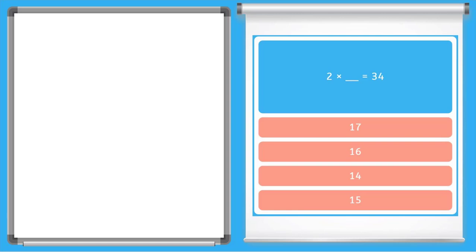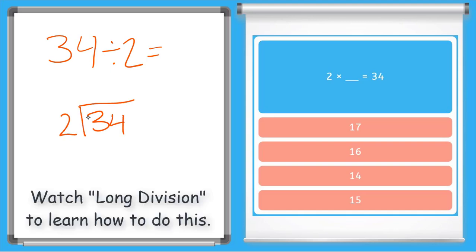All right, now I have 2 times an unknown equals 34. Now if I flipped that around, 34 divided by 2, hmm, that's not part of my division facts that I've memorized yet. So let me see. Let me solve this another way. 34 divided by 2 this way.